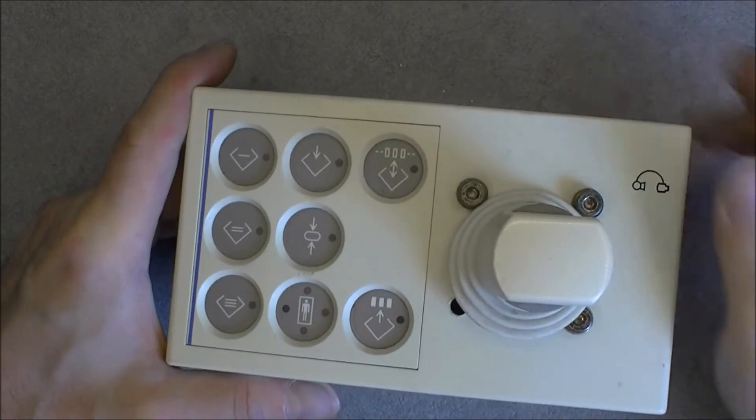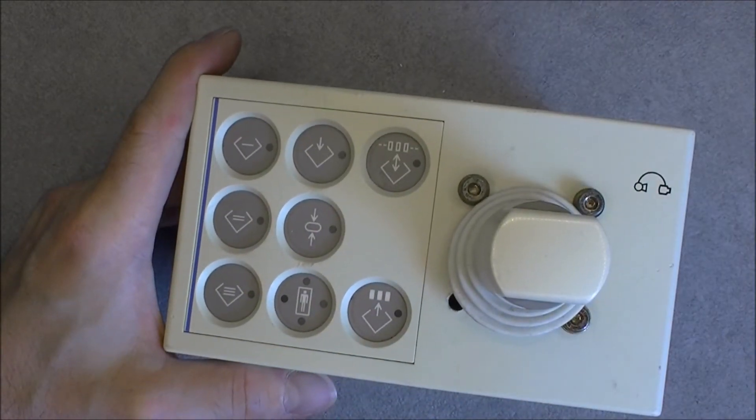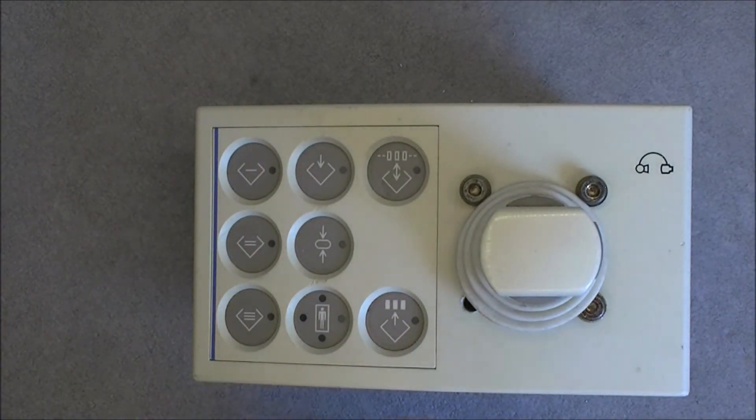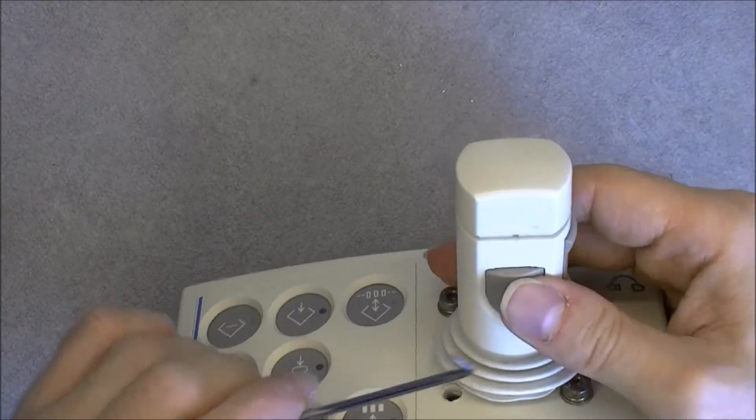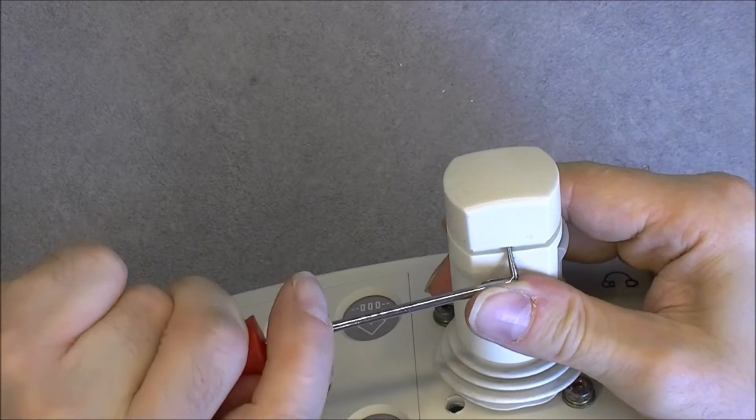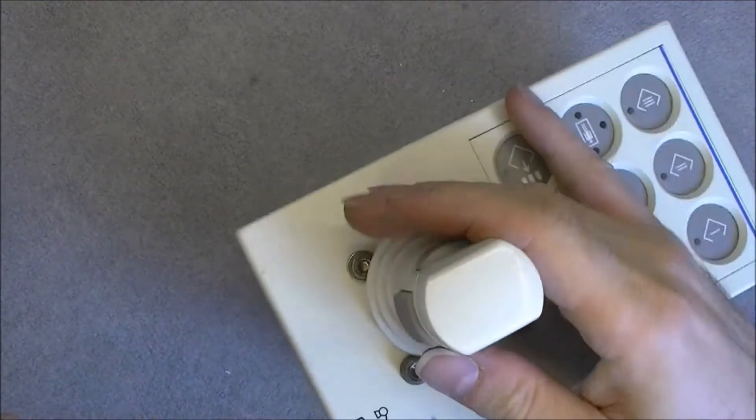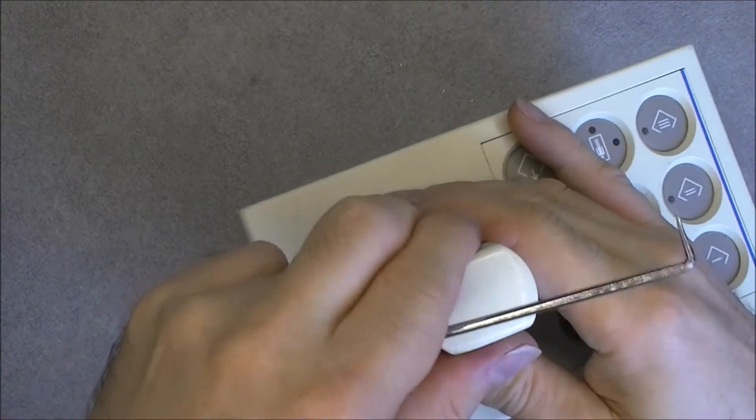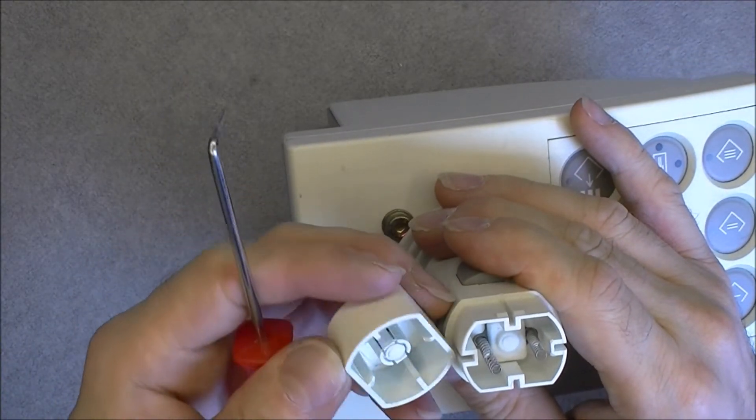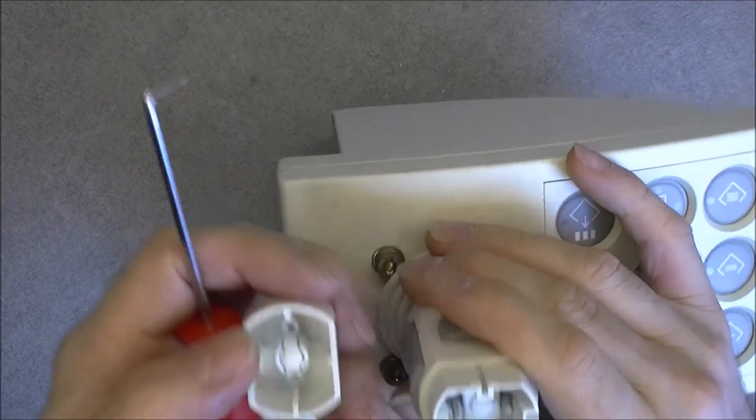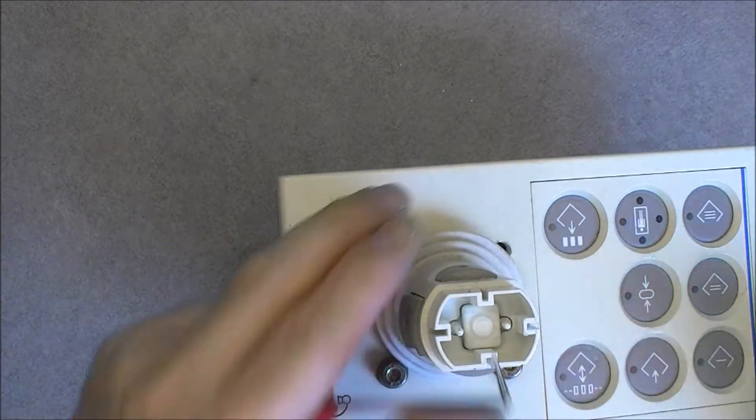We have the emergency stop button. It is a controller for the C-arm. Before we remove the bottom, I wonder if we can do anything about this thing. Maybe, it looks like yes.